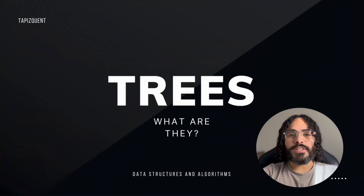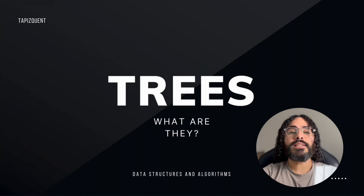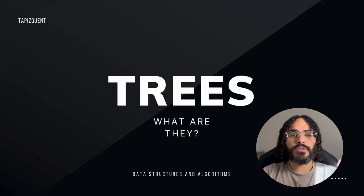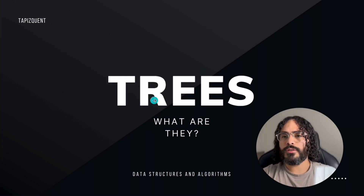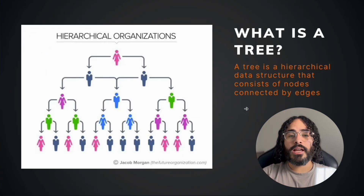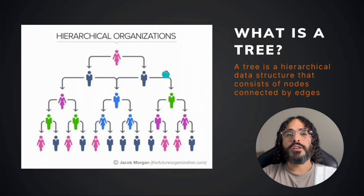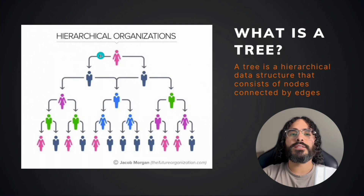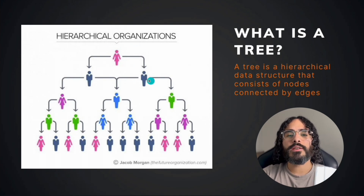Today we're going to turn that panic during interviews into confidence by breaking down one of the most fundamental data structures in programming: trees. So what exactly is a tree in computer science? A tree is a hierarchical data structure that consists of nodes connected by edges. Here we have a tree representing an organization's hierarchy — the CEO at the top, then C-suite executives, then managers, and so on.